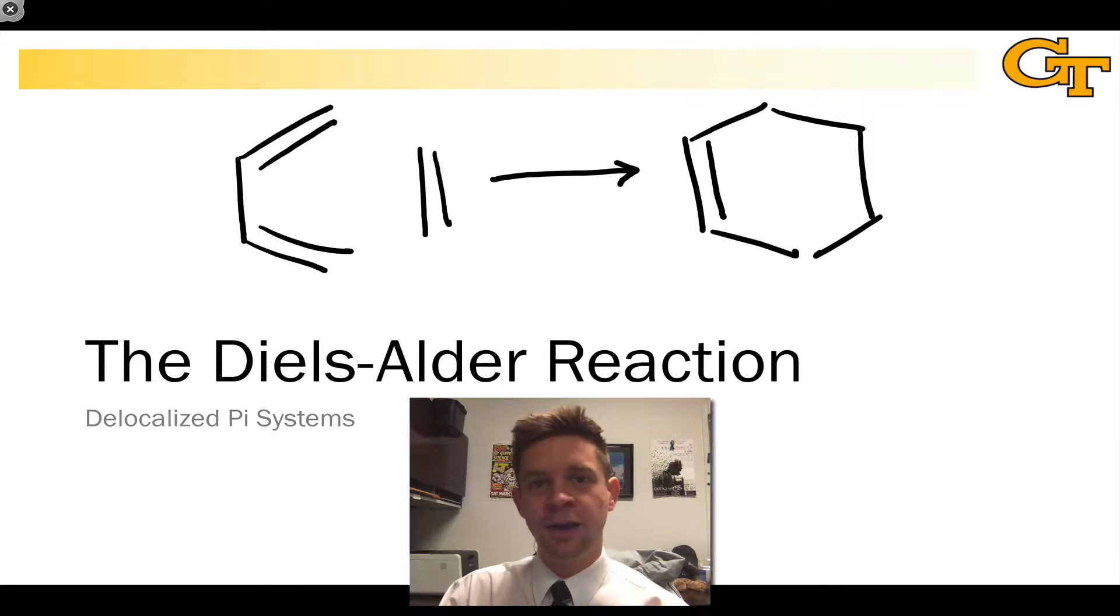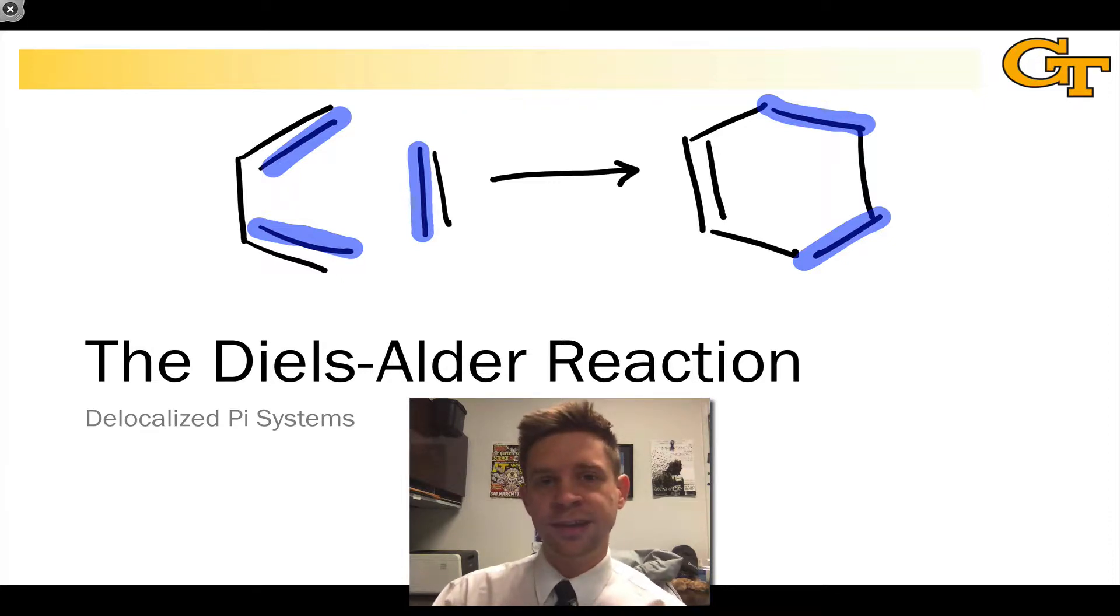The Diels-Alder reaction involves the combination of a four-atom pi system containing four pi electrons with a two-atom pi system containing two pi electrons. In the product, two new bonds have formed between the ends of the pi systems, and this is a concerted reaction that occurs in a single elementary step.